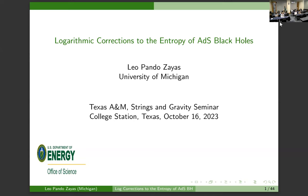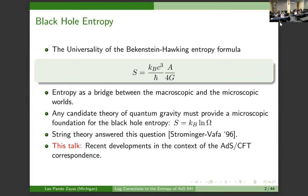My talk today is about the entropy of black holes. It's a good starting point if you want to understand quantum aspects of gravity. This formula is very universal and contains information about the microscopic degrees of freedom if you have a quantum theory. If you have a candidate theory for quantum gravity, one of the first things it has to do is give you a microscopic description of entropy — not just as some thermodynamic quantity in the first law, but essentially as some counting of degrees of freedom.